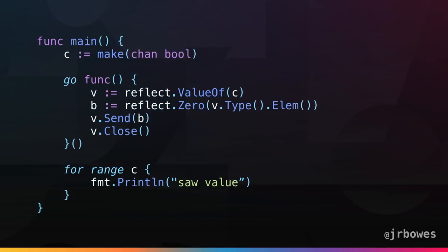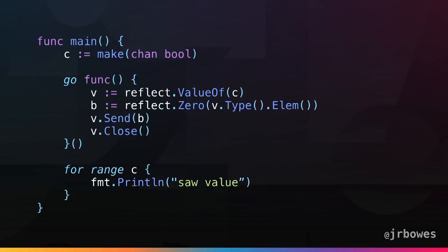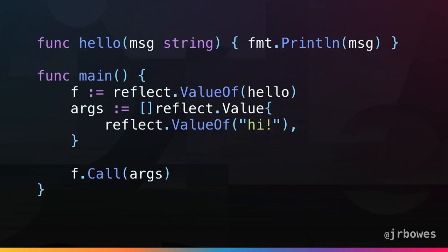Here's a reflect example: we take a chan bool and use reflect.ValueOf to get the value for it. We can look at the type, then call Elem() — which in the case of a channel strips off the chan part and gives you back the bool; for a pointer it gives you the underlying type. We can get the zero value of bool, send it on the channel, and close it. Ranging over this channel would return false and then close out.